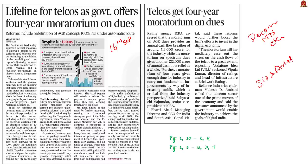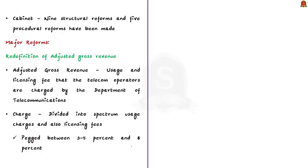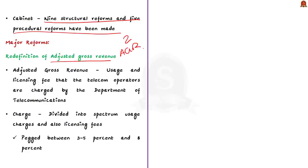The government announced nine structural reforms and five procedural reforms for the telecom sector. We will discuss two of the most important ones. First is the concept of Adjusted Gross Revenue, shortly known as AGR. Second is 100% FDI in the telecom sector under the automatic route. Let us start by understanding what AGR is: in simple words, adjusted gross revenue is the usage and licensing fee that telecom operators are charged by the Department of Telecommunication.